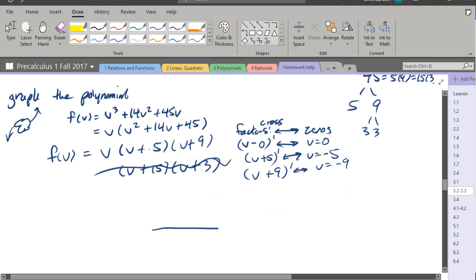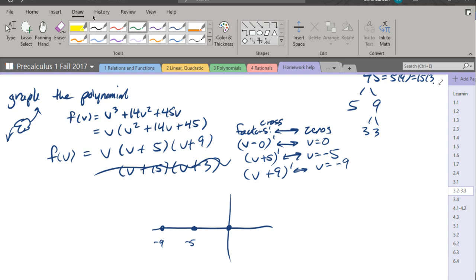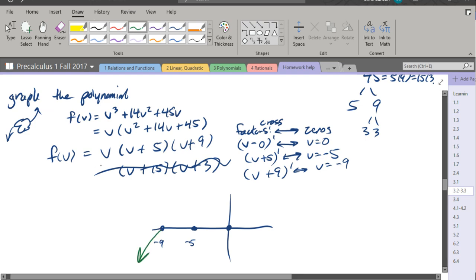So we're ready to graph. Most of my v values are negative. So I got 0, negative 5, negative 9. I'm going to use the end behavior next. So we got down on the left, up on the right. So our intercepts all cross, which means it goes cross, cross, cross like that. That's our graph.